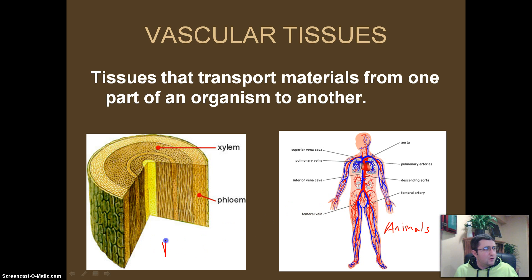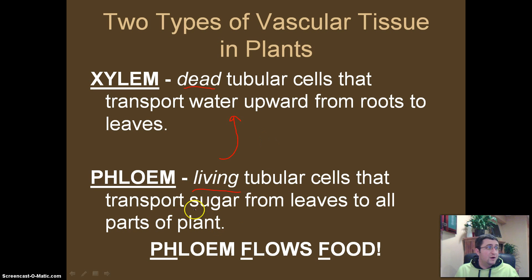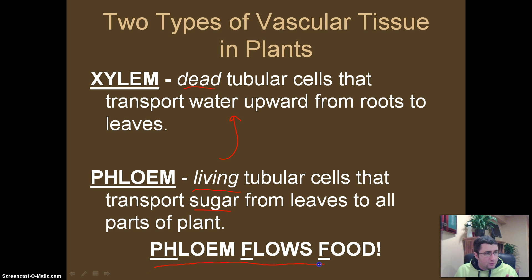In plants, they don't have arteries and veins, but they have something very similar. They have what's called xylem and phloem. Xylem is dead vascular tissue that's responsible for moving water up from the roots so it can be used by the rest of the plant. Phloem is living tissue that will move around sugar from the leaves where it has been created to wherever it needs to go to keep the plant alive. If you can remember that phloem flows food — those three F sounds — it will help you remember that phloem is responsible for food and xylem is responsible for water.